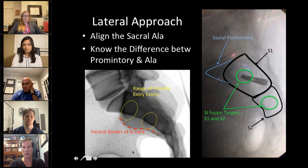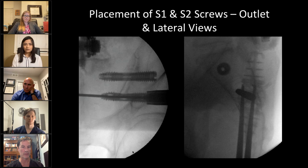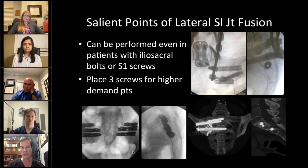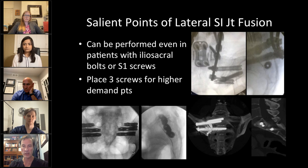The lateral approach is probably my favorite and the one I do the most. Using bone corridors in S1 and S2, you're able to place fairly large screws — 11.5 by 60, 11.5 by 50 millimeters. Low demand patients get two screws; high demand patients get three screws. This can be performed even in patients with S1 screws or iliac bolts. Regarding iliac bolts: those designed to protect the SI joint don't do a great job — patients commonly still have pain. S2AI screws are much better, but the lateral approach screws can still be placed with existing hardware.